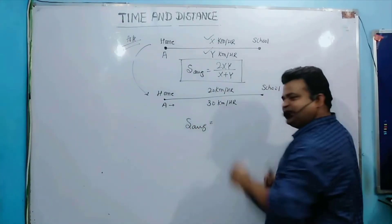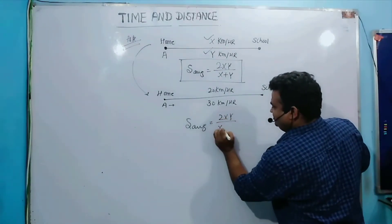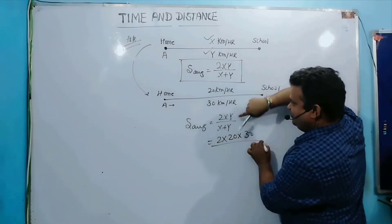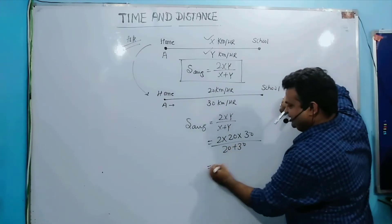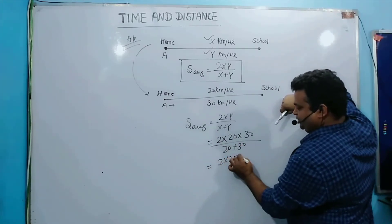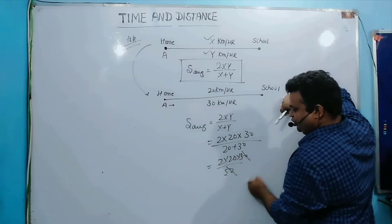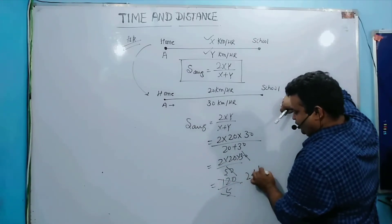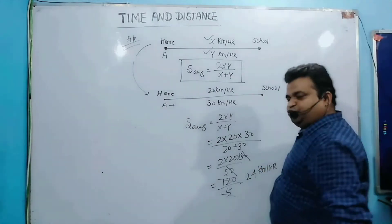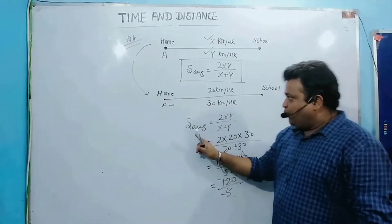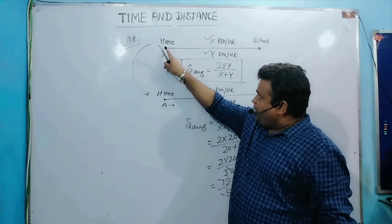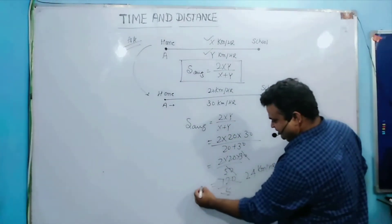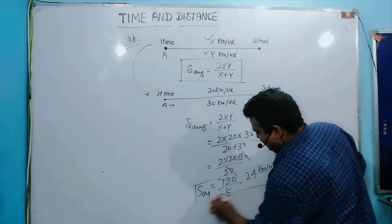So what is A's average speed? Average speed equals 2xy divided by x plus y. So 2 into x value 20 into y value 30, divided by 20 plus 30. This gives 2 into 20 into 30 divided by 50. Simplifying: 1200 divided by 50, which equals 24 km per hour. So 24 km per hour is the average speed when A goes from home to school at 20 km per hour and returns at 30 km per hour.